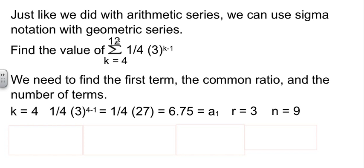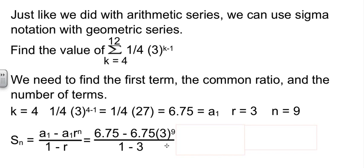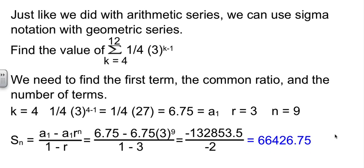Now we have everything we need. We can plug into the formula number 2, because we have a1, we have r, and we have n. Plug in the arithmetic, or the values, do the arithmetic with the calculator. And we end up with a sum of 66,426.75. If you had 3 quarters here, that would be acceptable as well.